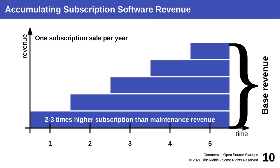The key point is that with subscription-based revenue — as with the traditional license-plus-maintenance model — because it's a product and customers stay around, the revenue just keeps piling up. You have this growing base revenue that makes the product and company so profitable over time, if you survive.